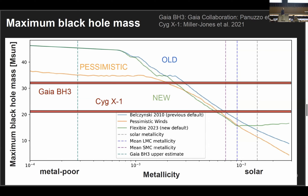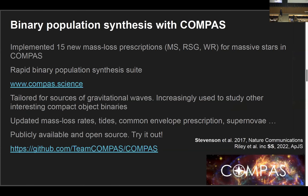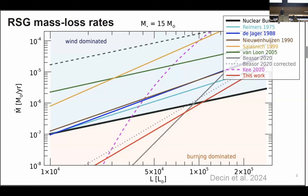Question: How can mass loss affect the final fate of massive stars — the red supergiant problem where no bright supergiant is observed collapsing as a Type IIP supernova? Response: If you have higher mass loss rates for the highest-mass red supergiants, those stars will lose their envelope within the red supergiant phase, evolve back to the blue side of the HR diagram, and instead of dying as Type IIP supernovae, they will die as Type Ibc. So you get a different population of supernova progenitors.